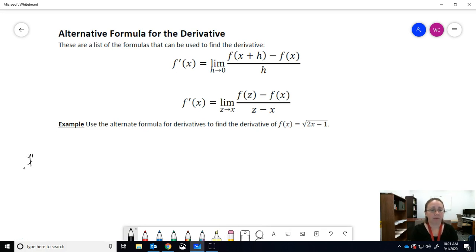So f prime of x, still called the same thing, still does the same thing. It's just a little bit different in how it all works out. So f of z. Well, let me write the formula first so you know which one I'm using.